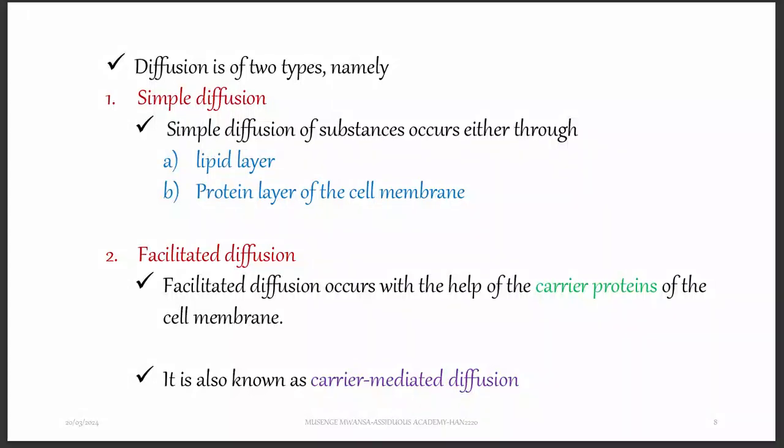Passive transport, also known as diffusion, is of two types: simple diffusion and facilitated diffusion. Simple diffusion is where molecules pass through the cell membrane by themselves. In facilitated diffusion, molecules still move from a region of high concentration to a region of low concentration, but there is something helping them — we call them carriers — which carry the molecule from one end of the cell to the other.